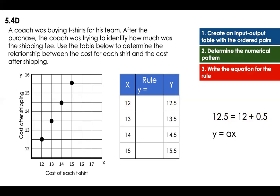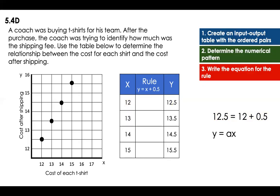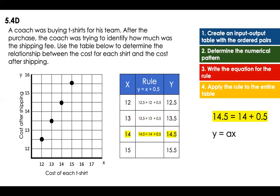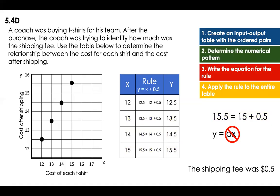If I do that, I just have to write the equation for the rule in my input-output table. Let's see if this works: 12.50 is equal to 12 plus 5.10. How do I know if this is correct? I'm going to apply the rule to the entire table. 13 plus 5.10 is 13.50 — correct. 14 plus 5.10 is 14.50. 15 plus 5.10 is 15.50. With that being said, the formula was the additive one. The shipping cost was only $5.10.